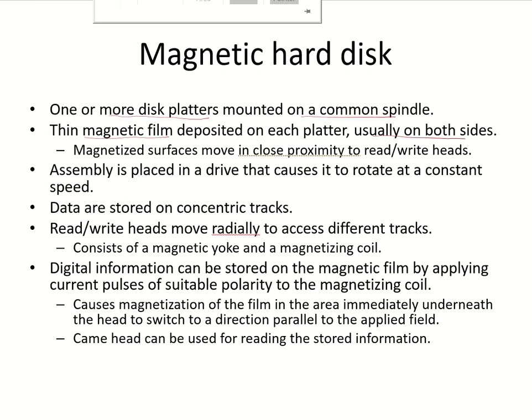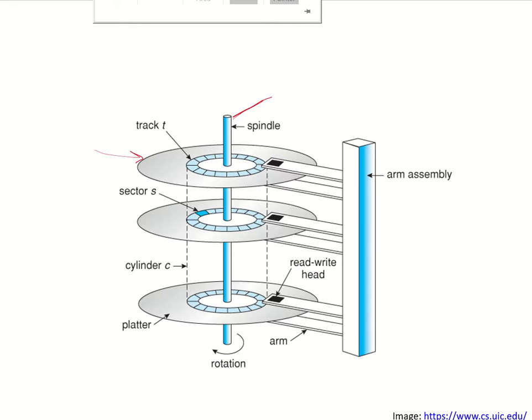There is a read-write head which moves in very close proximity with these magnetic surfaces. This read-write head is very close to the surface and it is used for reading as well as writing information on these surfaces. For each surface, there is one individual read-write head.